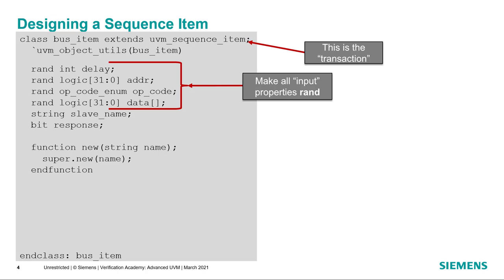There are certain properties of the sequence item that may be referred to as input properties, like the address and the data. We declare all of those to be rand so that we can randomize the sequence item, and all of those fields will have random values assigned to them. Since UVM objects are SystemVerilog classes, you can include constraints in your class definition as well. There may be other fields that you don't want to have randomized — these are typically the response fields that get supplied through the operation of the transaction. In UVM, there are a number of methods we need to define for the transaction so that other parts of UVM may interact with it through those methods.